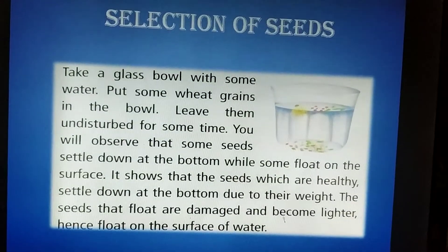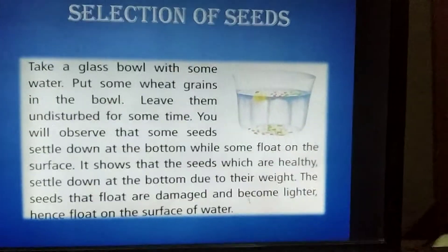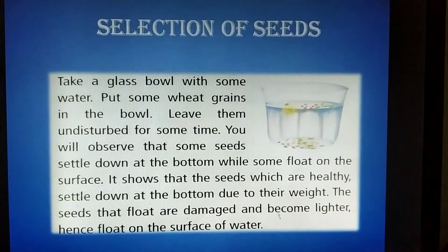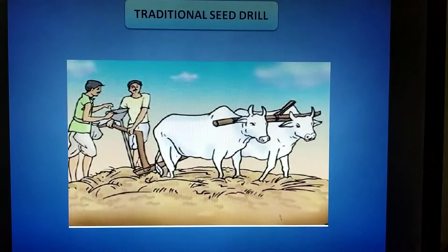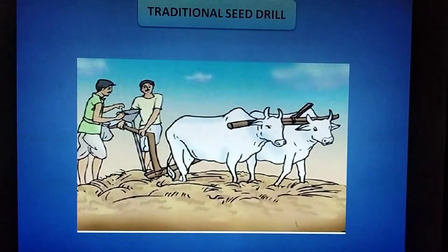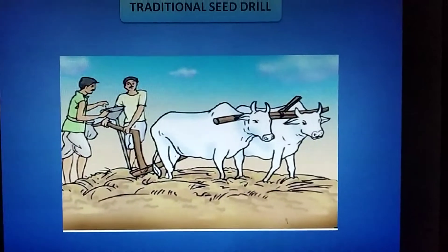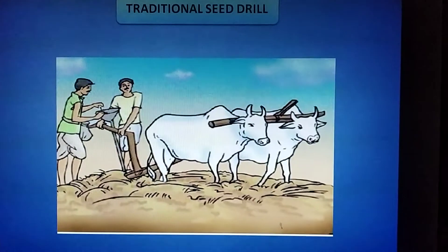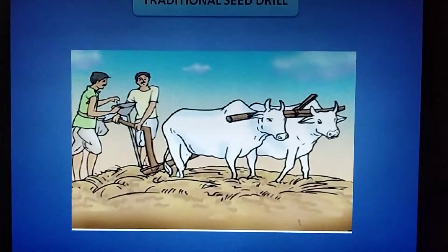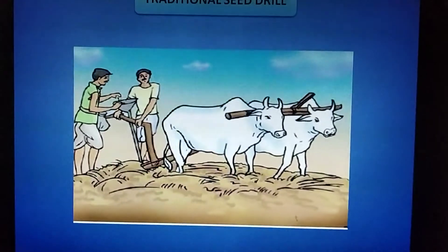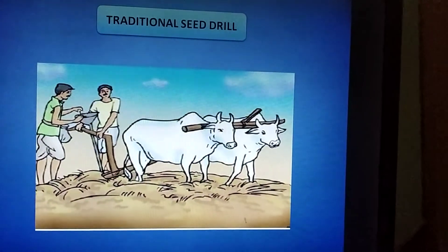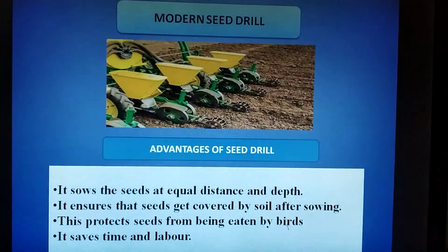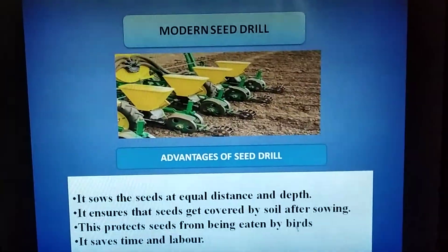Before sowing, we must know about the tools used for sowing seeds. The traditional tool for sowing is shaped like a funnel. It is filled with seeds, which pass down through two or three pipes with sharp ends that pierce the soil and place the seeds there. In the modern era, we use a seed drill, which is connected to a tractor and dragged along the field.